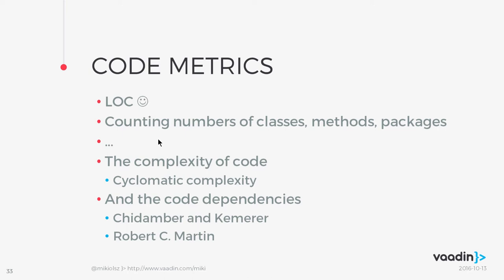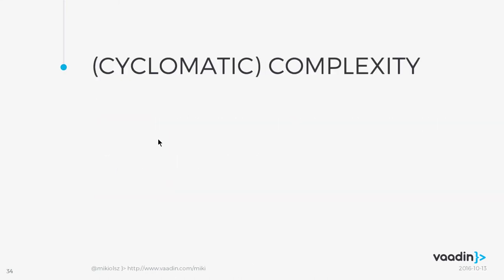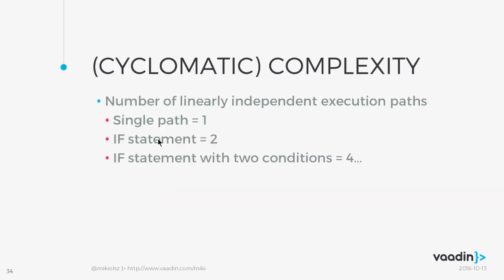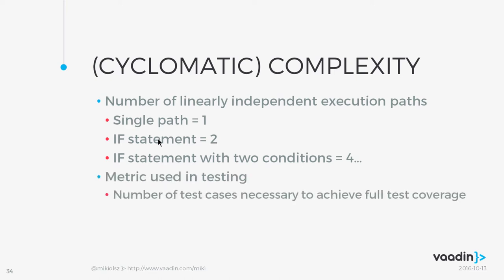Today we'll look at the complexity of code — in particular, cyclomatic complexity — and code dependencies, using the Chidamber and Kemerer object-oriented metrics and Robert C. Martin's metrics for dependencies. Cyclomatic complexity describes how a program executes: it represents the paths the program takes. A single linear path has complexity one. Adding an if statement raises it to two; an if-then-else raises it to four.